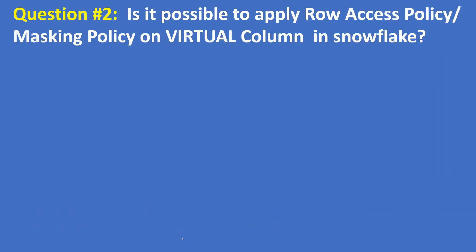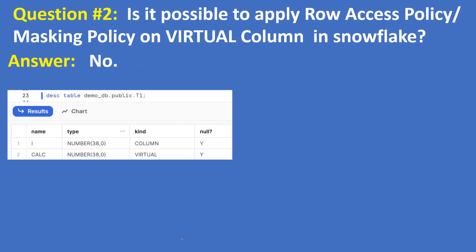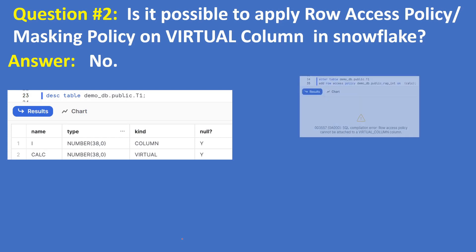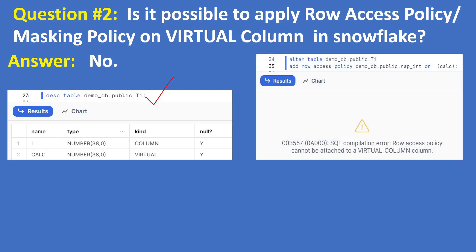Next question: is it possible to apply a row access policy or masking policy on a virtual column in Snowflake? The answer is no. If you try to create one, you will get the below error. The table t1 has a virtual column — the column kind is 'virtual', not an actual column. When you try ALTER TABLE with ADD ROW ACCESS POLICY on that column, you get: SQL compilation error — row access policy cannot be attached to a virtual column.